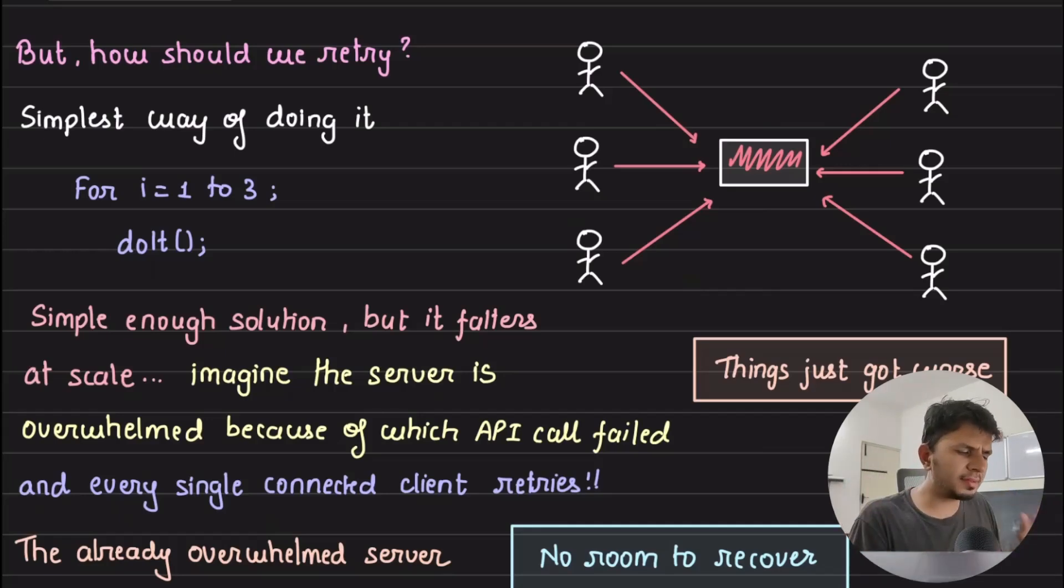But what happens at scale? At scale, when you have millions of clients and the server was a little overwhelmed because of which the API call failed for all the clients, now every single one of the connected clients saw that failure and is making the API call to recover from the intermittent failure.